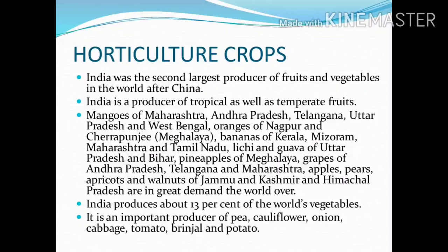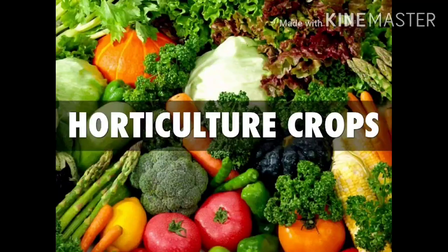India produces about 13% of the world's vegetables. It is an important producer of pea, cauliflower, onion, cabbage, tomato, brinjal, and potato.